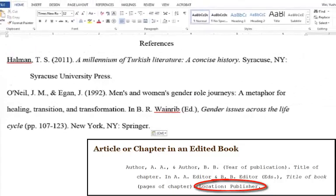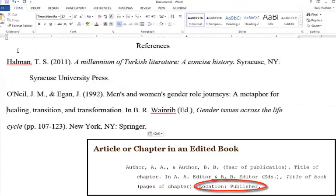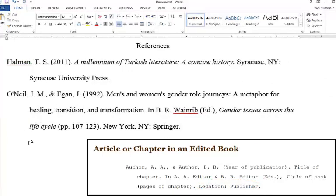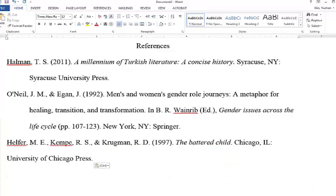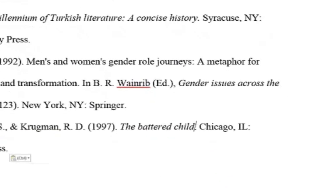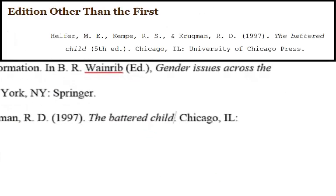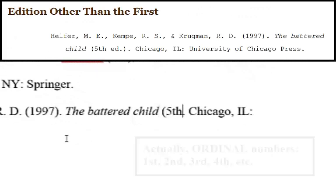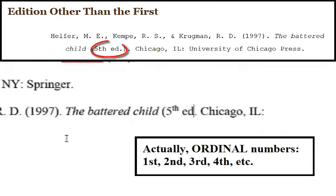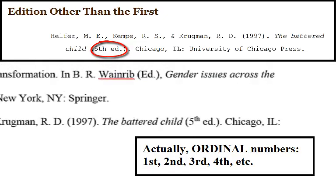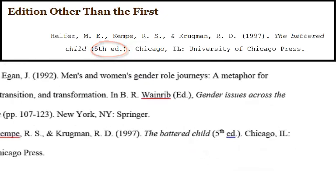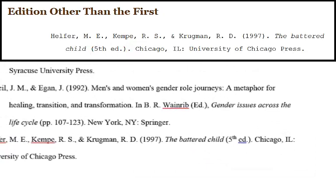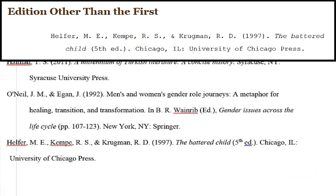Don't forget the half-inch hanging indent. For an edition after the first, include the number of the edition in parentheses after the title, but without italics. Use cardinal numerals such as second, third, or fourth. Abbreviate the word edition as ed. with a period. Then add the hanging indent.